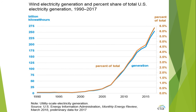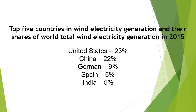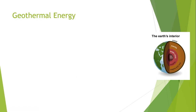It can be seen that wind power generation is on the increase, and from 2015 onwards it represents nearly seven percent of total generation. The top five countries in wind electricity generation and their shares of world total energy in 2015 are: United States at 23%, China at 22%, Germany at 9%, Spain at 6%, and India at 5%.